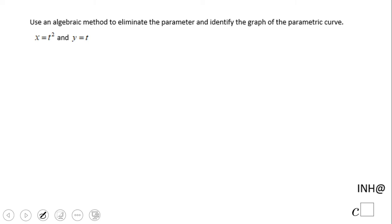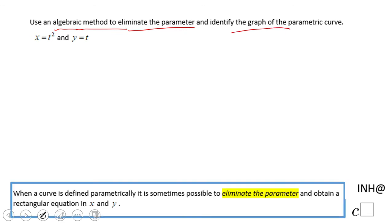Welcome or welcome back to C square. In this example we're going to use an algebraic method to eliminate a parameter and identify the parametric curve. This is the algebraic method.